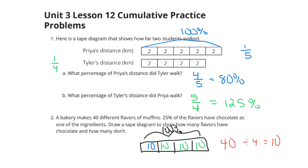Now, 25% would be one of the four, so this one here is our chocolate one. These 30 here are not chocolate.